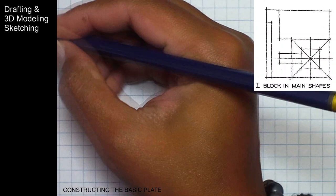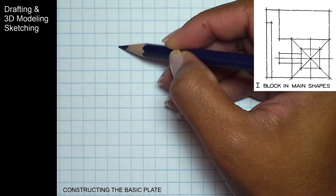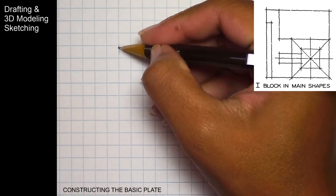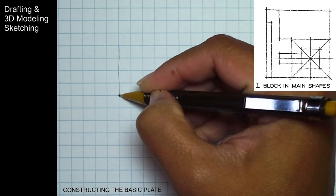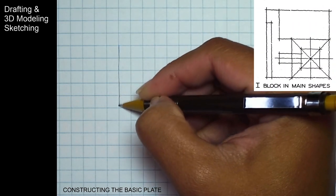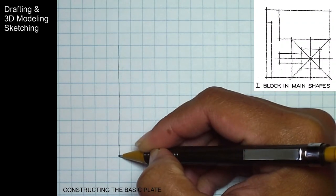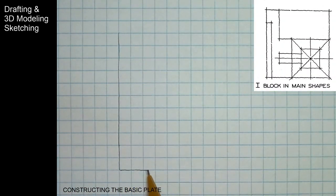I'm going to go based off proportions on what I'm seeing. So my proportions, I'm going to go with 1, 2, 3, 4, 5, 6, 7, 8, 9, 10. I'm going to go with 10 units high.